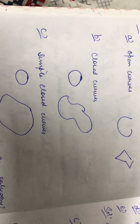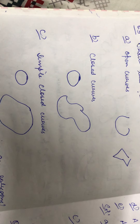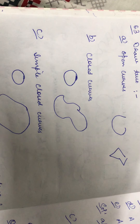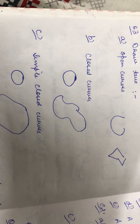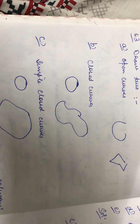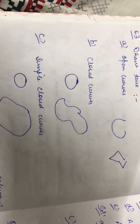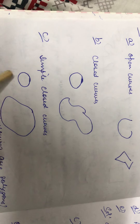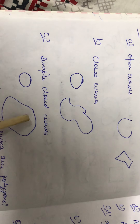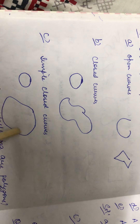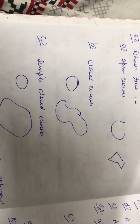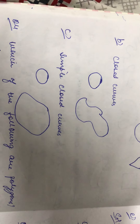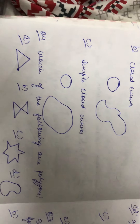Next we have to draw simple closed curves. Simple closed curves means a curve that doesn't intersect. A closed curve that doesn't intersect. So this is a simple closed curve. You can draw any one of these or by your own thinking.